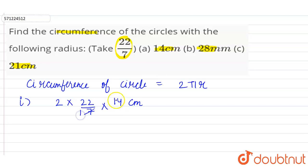So 7 into 2 is 14. The circumference will be 2 × 22 × 2. 2 × 2 is 4, then 4 × 22 equals 88. So the circumference of the circle when the radius is 14 cm is 88 cm.